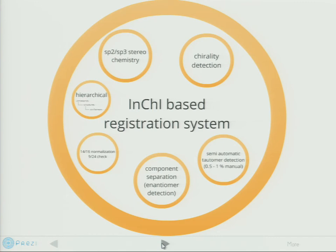We also try to deal with tautomers in a very specific way. We almost always try to automatically recognize tautomers, but not all cases can be handled using InChI. So we have three categories: one where we are very sure the compounds are not tautomeric, another where we are very sure they are tautomeric, and in about one and a half percent of cases we recognize that automatic recognition cannot be done and human interaction is needed. I think that is a manageable amount.